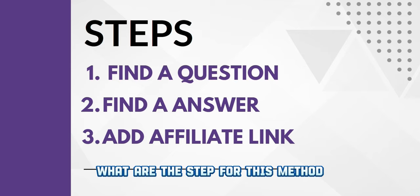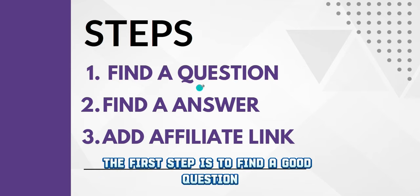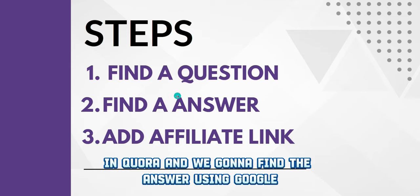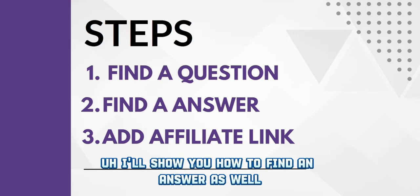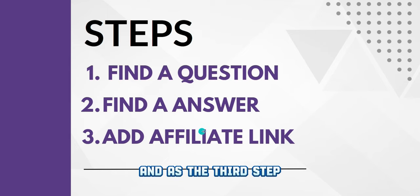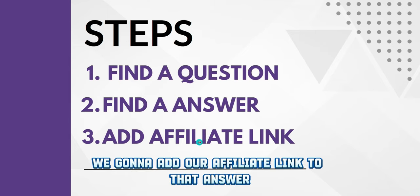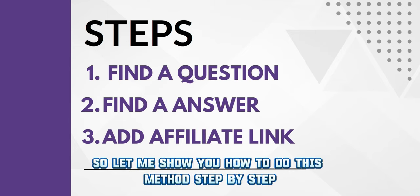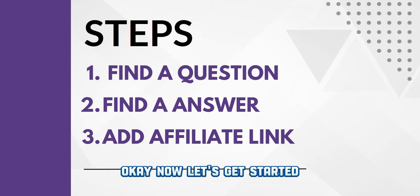Now let's see what the steps are for this method. The first step is to find a good question on Quora. The second step is to find an answer using Google. And the third step is to add our affiliate link to that answer. Let me show you how to do this step by step.